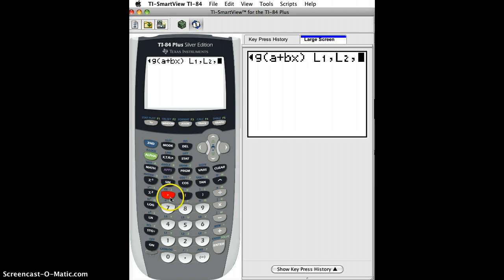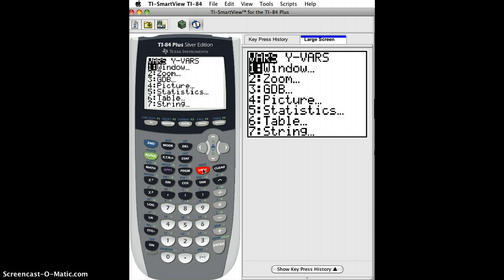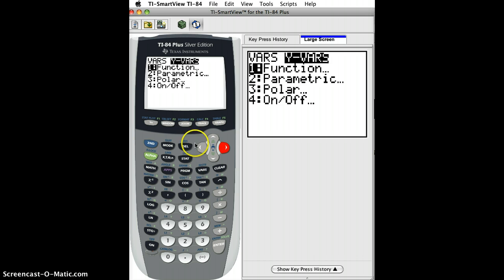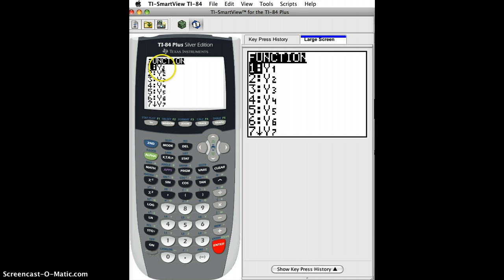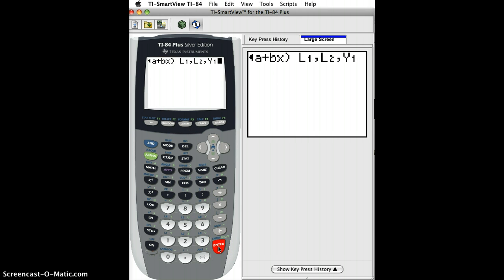And then the last thing is you want to store it as Y1 in your function. So you just click on variables, go over to Y variables, one will be highlighted function, hit enter. And then the first one Y1, just hit enter like that.